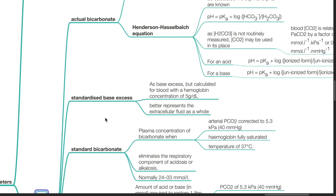Standardized base excess is the same as base excess, but calculated for blood with a haemoglobin concentration of 5 grams per decilitre. It better represents the extracellular fluid as a whole.